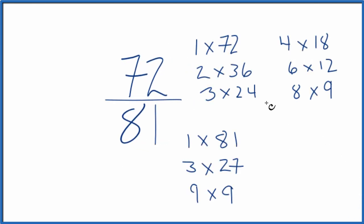When I look at the factors for 72 and 81, I'm looking for the greatest common factor, and it looks like 9. 9 is going to be the greatest common factor. So we'll divide 72 by 9, 81 by 9, and we'll simplify 72 over 81.